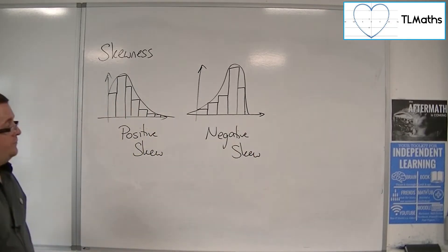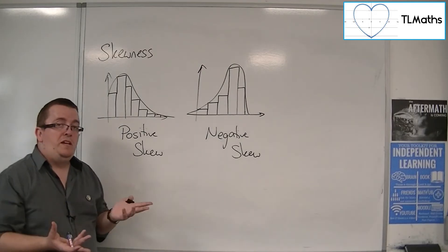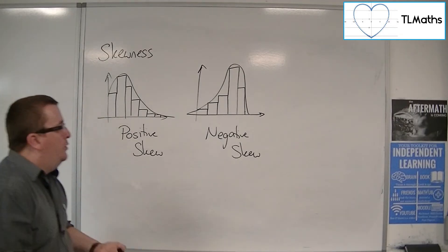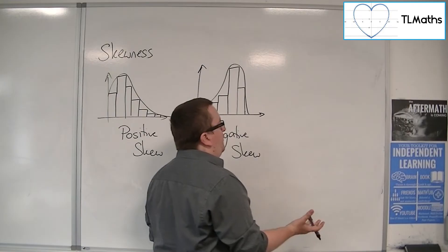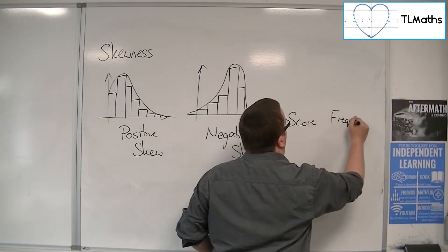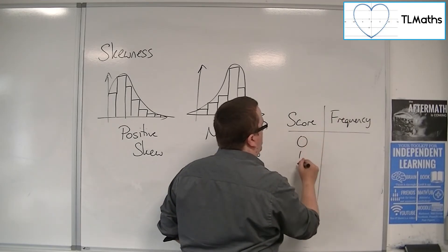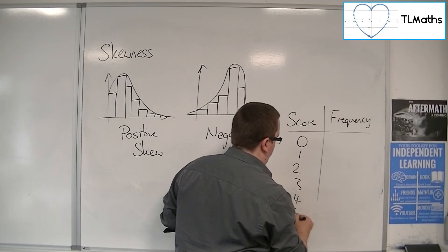So it doesn't have to be graphical. It could be numerical as well. You could have it as a frequency table. So if we had score and frequency, and the scores were 0, 1, 2, 3, 4, 5...